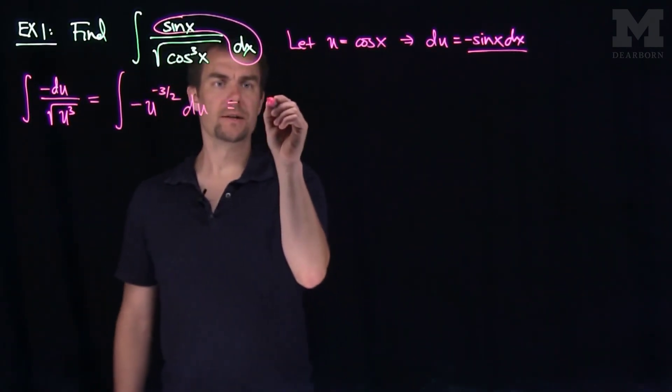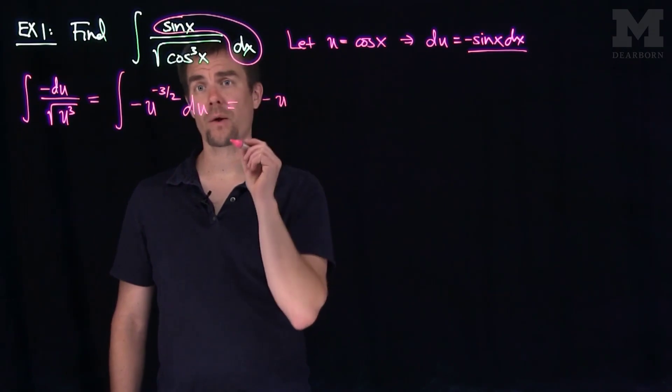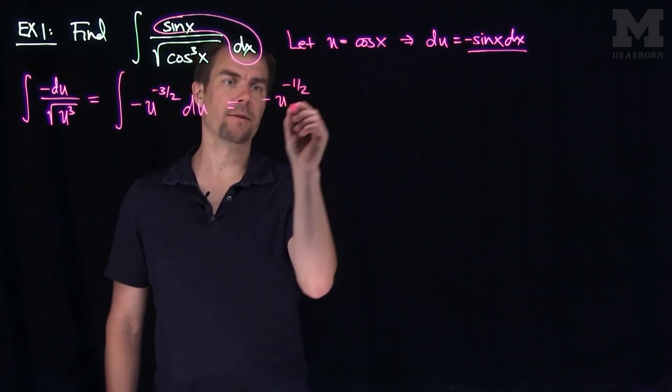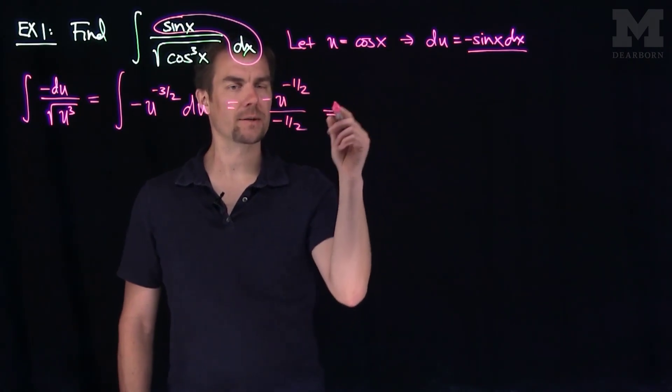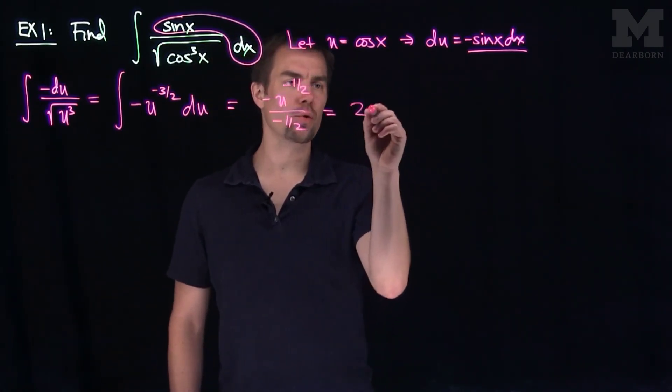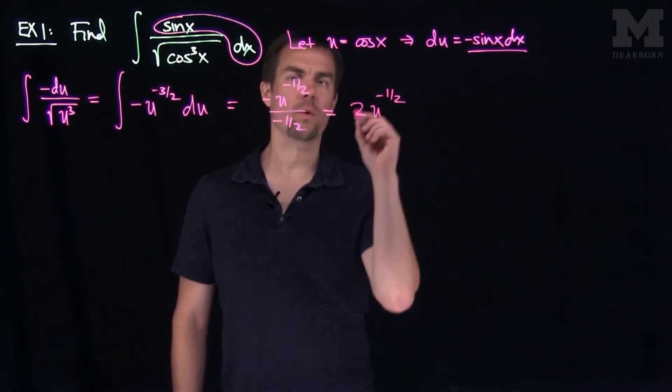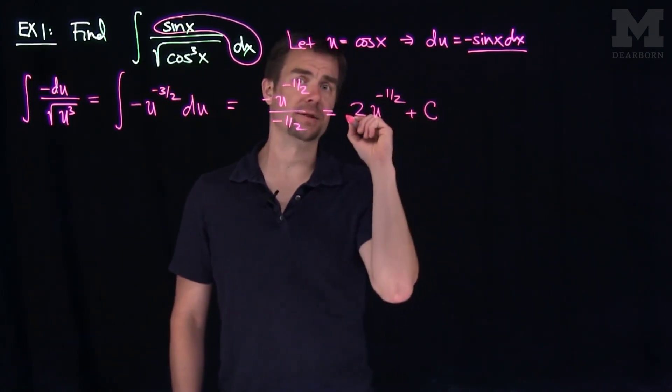So what we'll do is we'll have a negative u, I'm going to raise the power by 1, so I'll turn into negative 1 half, and divide by the negative 1 half. And so if we simplify this, what we'll get is 2u to the negative 1 half plus a constant c of integration.